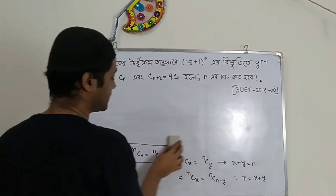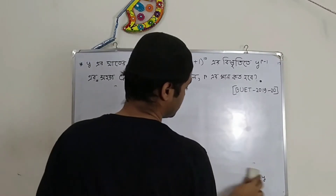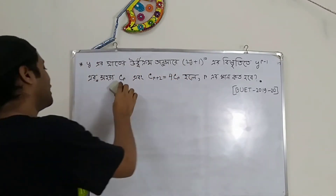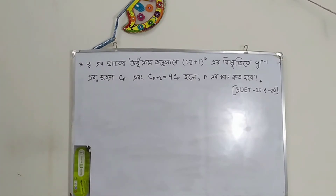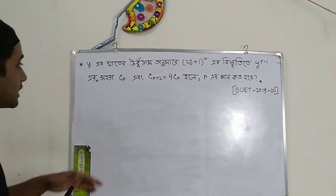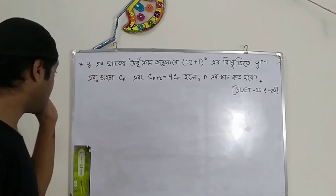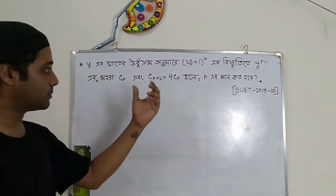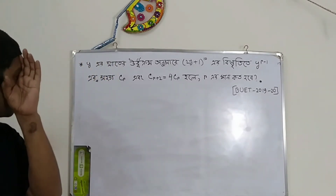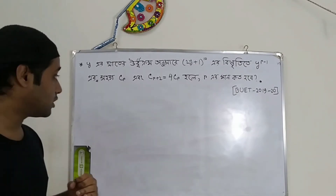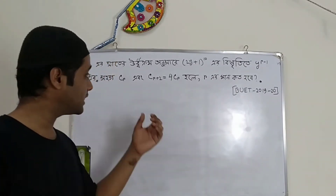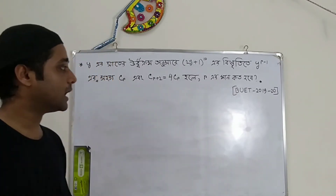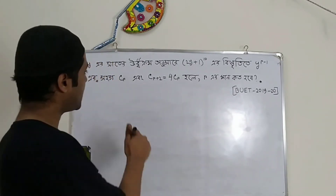So now we have a question. In 2020, we asked the best question. We have two minutes to solve this question. We have 2y plus 1 is equal to 2 to the power of 10. Then y to the power of r minus 1 is Cr. So Cr plus 2 is equal to 4Cr.